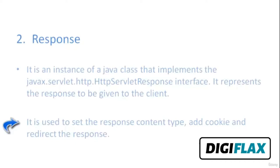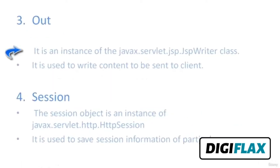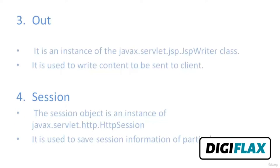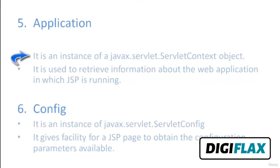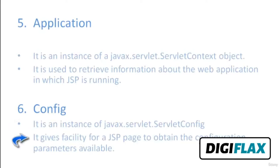The out implicit object is an instance of the javax.servlet.jsp.JspWriter class and is used to write content to be sent to the client. The session implicit object is an instance of javax.servlet.http.HttpSession and is used to save session information for a particular user. The application implicit object is an instance of javax.servlet.ServletContext and is used to retrieve information about the web application in which JSP is running. The config implicit object is an instance of javax.servlet.ServletConfig and gives a JSP page the ability to obtain configuration parameters.